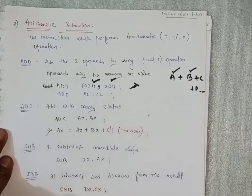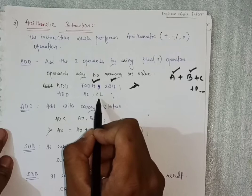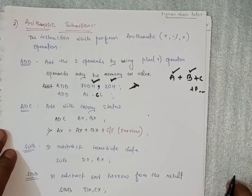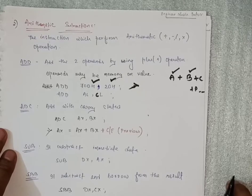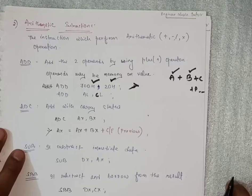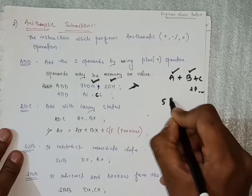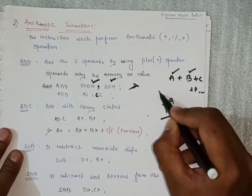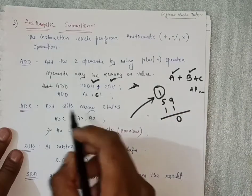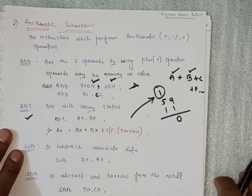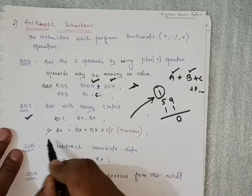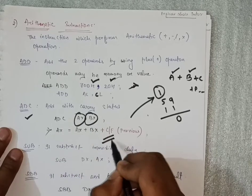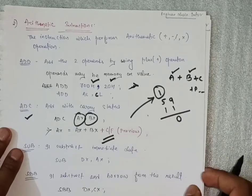The second instruction is ADC — Add with Carry. As we know, some operations like 9 plus 11 produce a carry. For example, the result is 0 and 1 is carried. For this carry, we use ADC — it tells us if there is a carry. The command is ADC AX, BX — AX and BX will get added along with whatever carry flag was set previously.